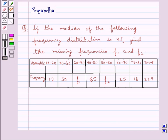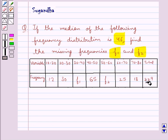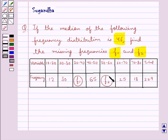Hello and welcome to the session. In this session we discuss the following question: if the median of the following frequency distribution is 46, find the missing frequencies F1 and F2. We are given this frequency distribution with class intervals and corresponding frequencies, and we are also told that the total of all frequencies is 229.